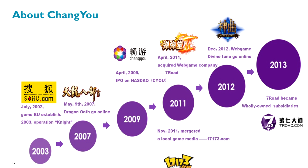In 2011, we acquired two big Chinese companies. One is a web game company called Seven Road, which is very famous in China — we have very professional experience with web game companies and lots of user data. We also have a local game media called 1773.com, which is a portal for game users and developers. In 2012, we published our web game called Divine Tune. Last year, Seven Road became wholly owned by our company.